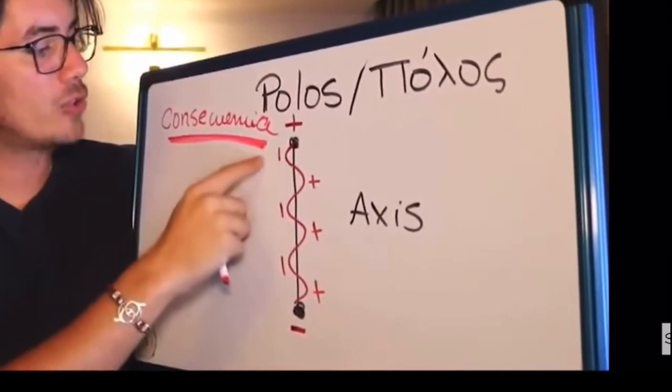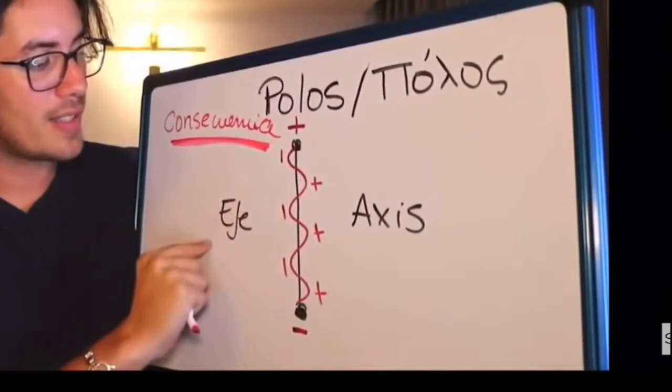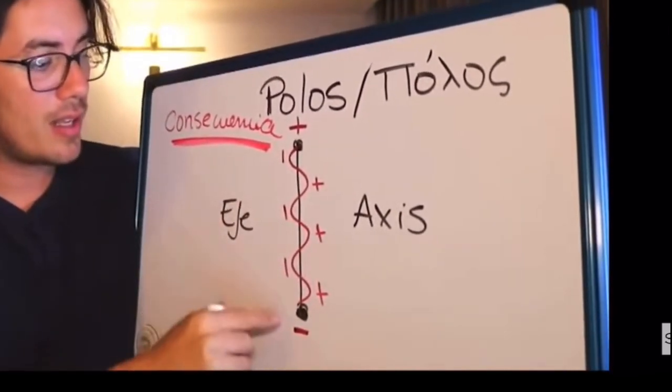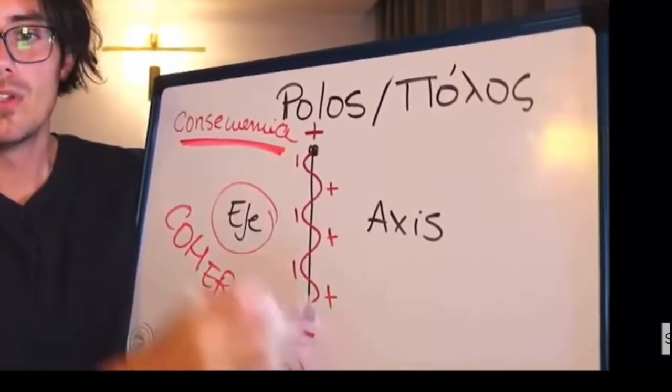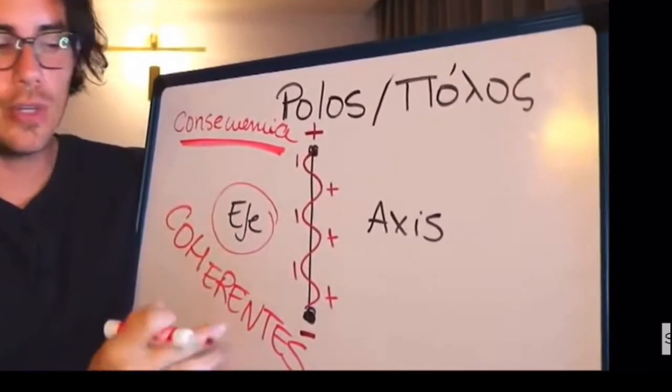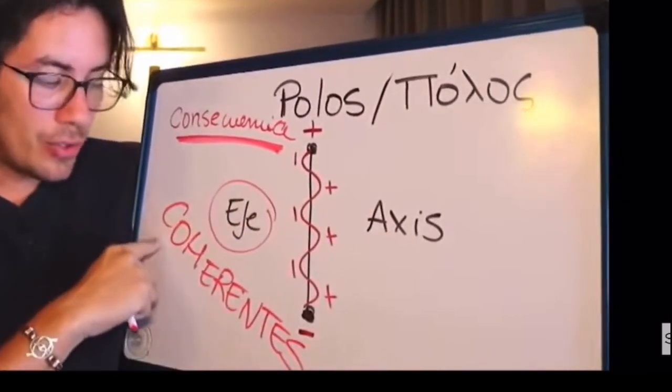What is the consequence? It's an attribute of being harmoniously in your own axis. And what is an axis? Polarity. So the only way in which you can be in your own axis and be coherent is only thanks to polarity.